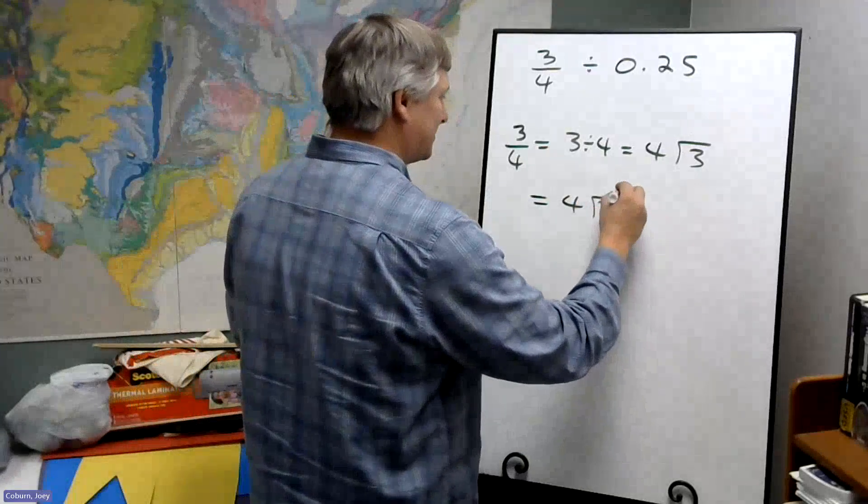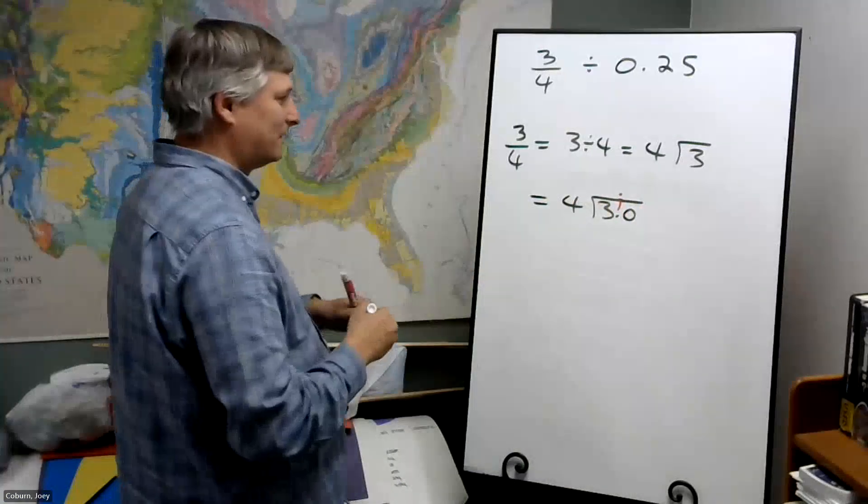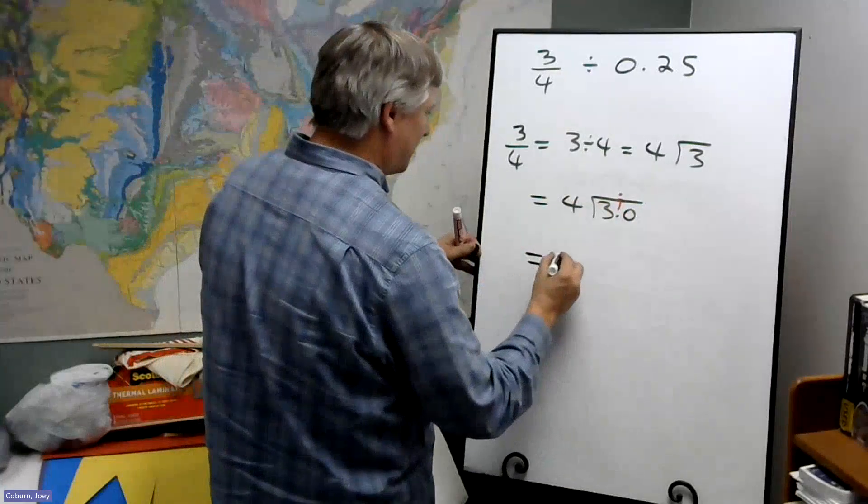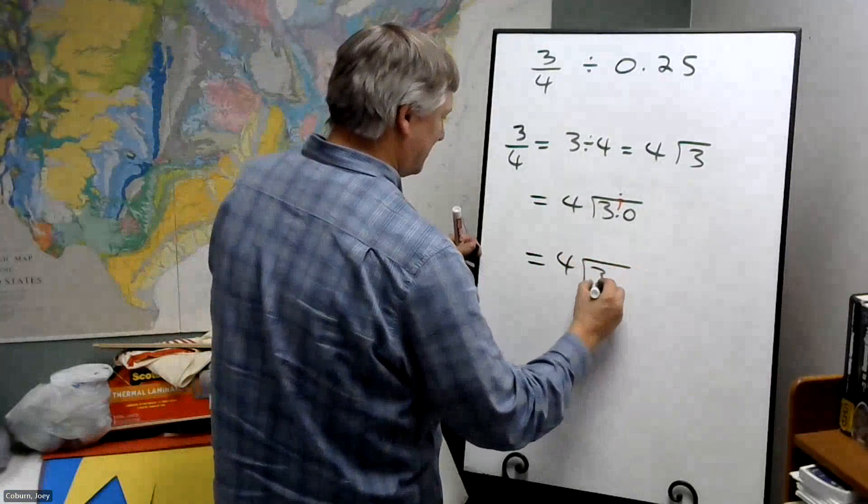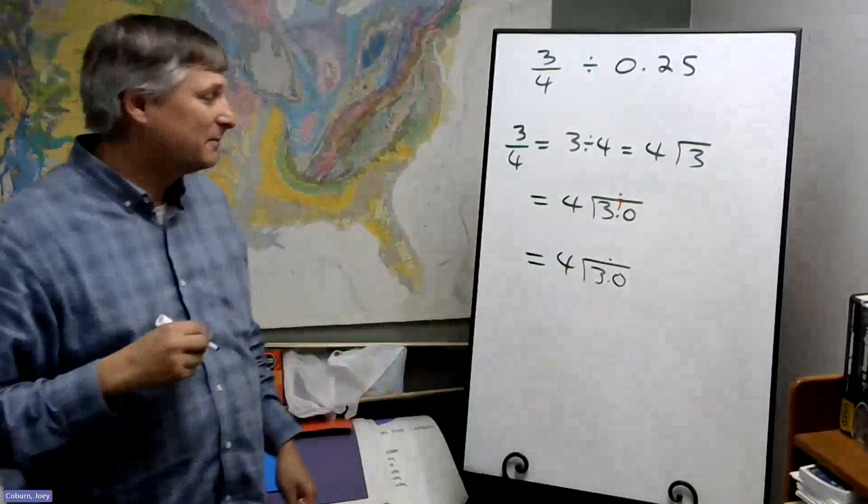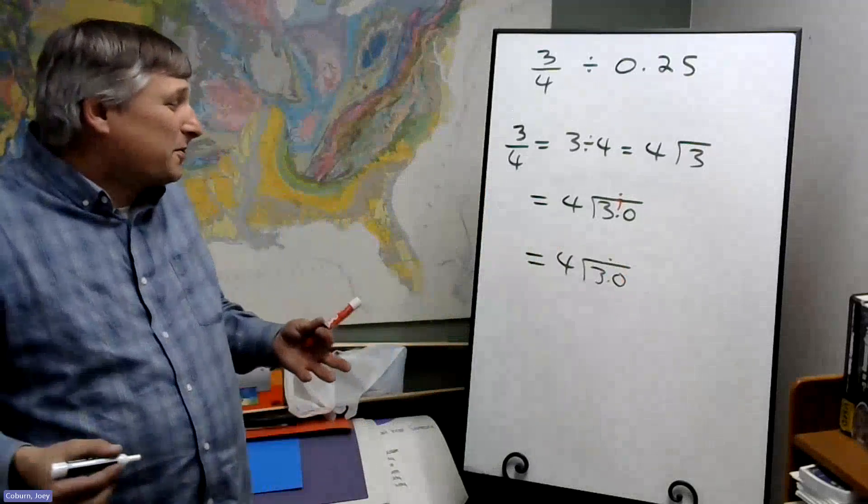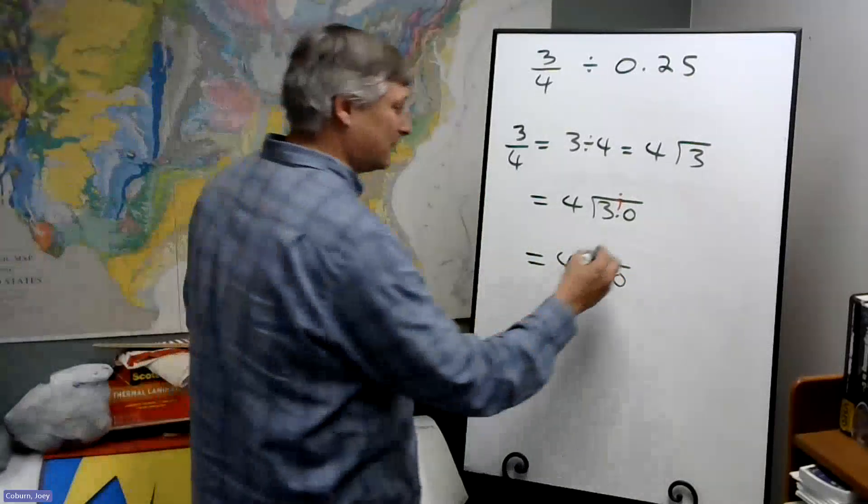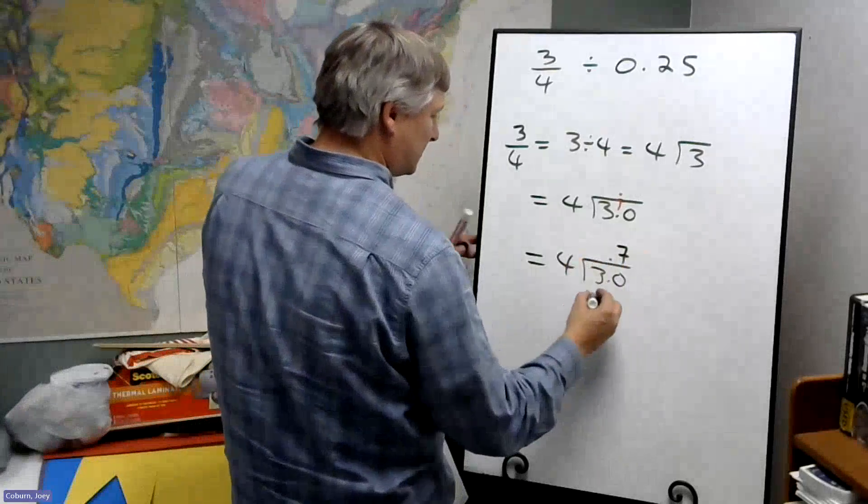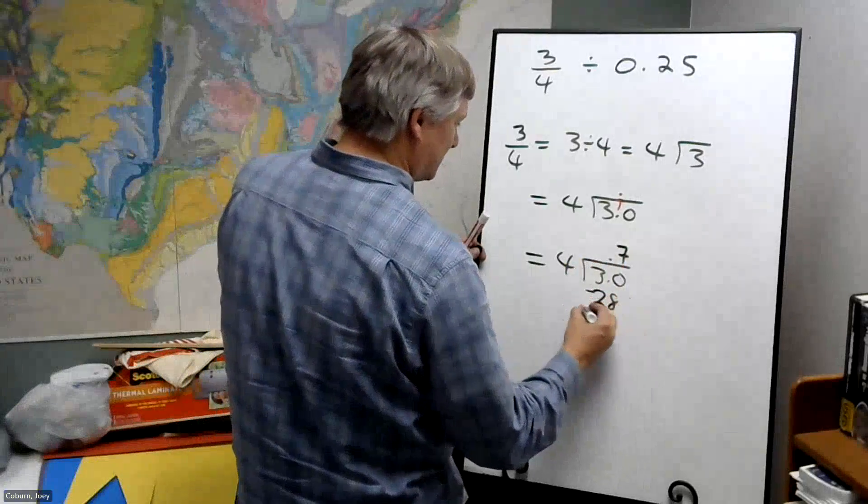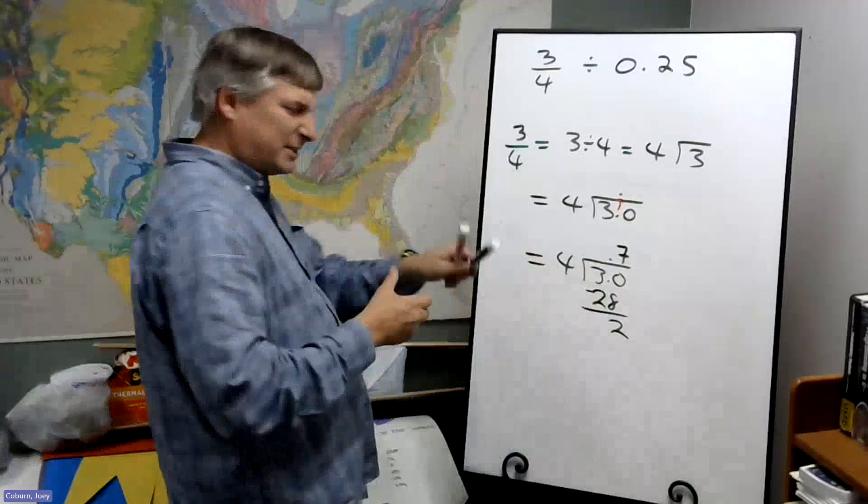We'll get four into our pretend 30, our decimal ready to go. So, four goes into 30 at most seven times. Seven times four is 28. Subtract is two.